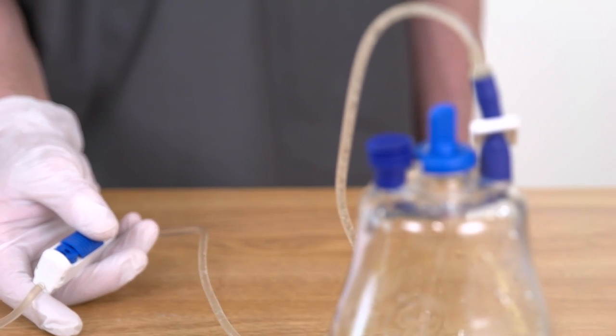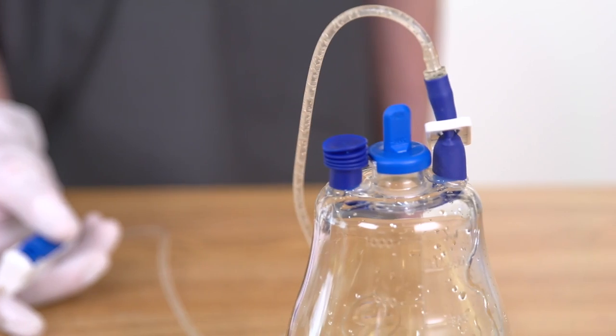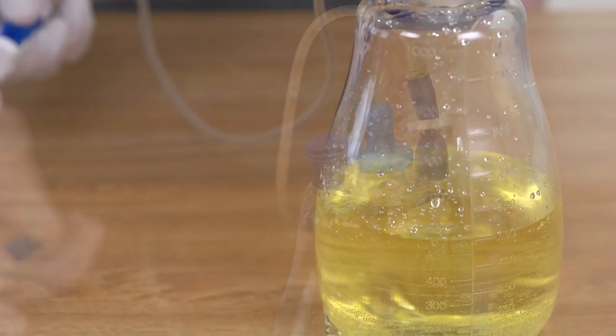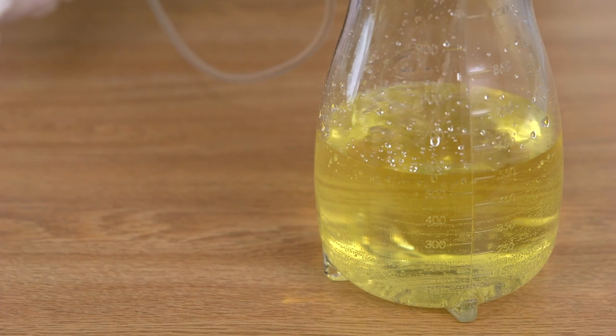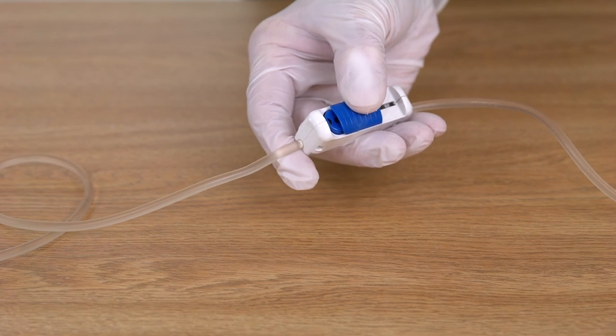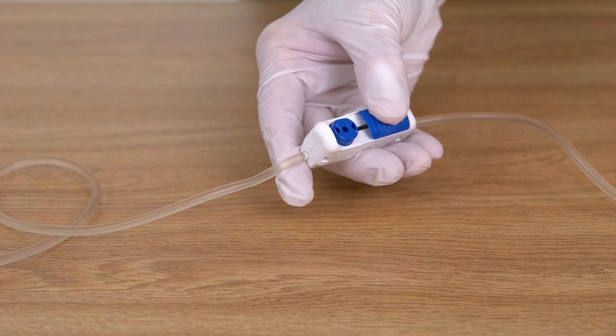Drainage typically takes 5 to 15 minutes. Slowing flow rate will signal that drainage is nearly complete. Once drainage has stopped or the bottle is full, release the button on the flow control valve to stop the vacuum.